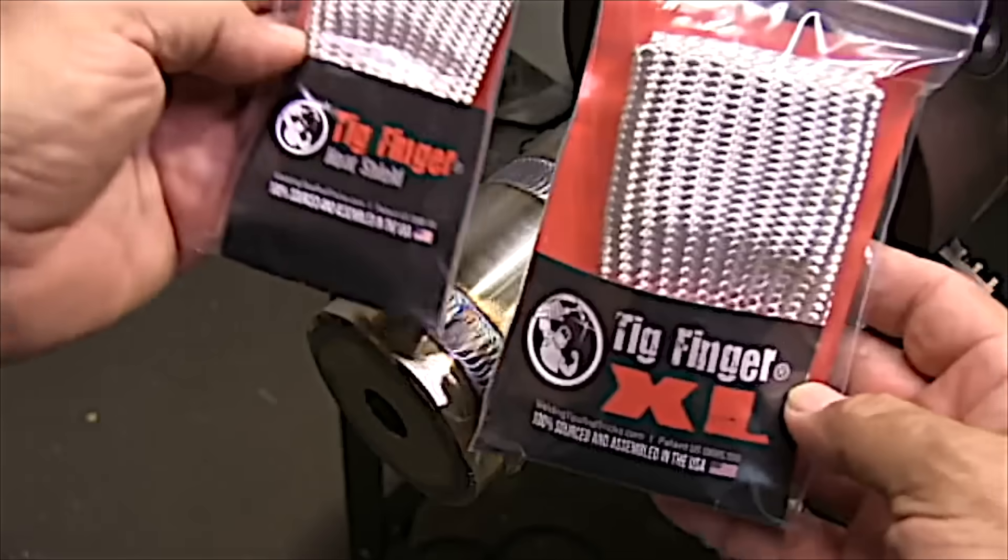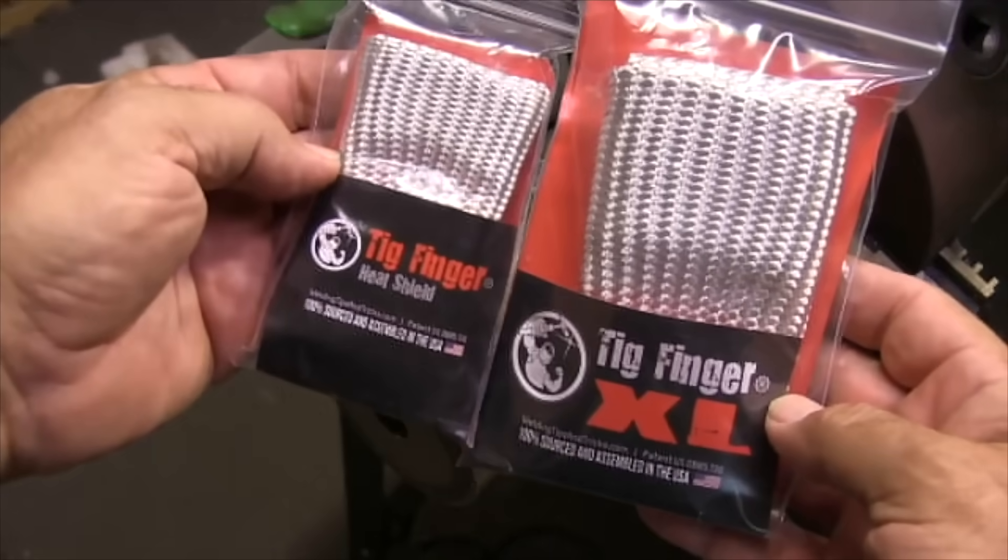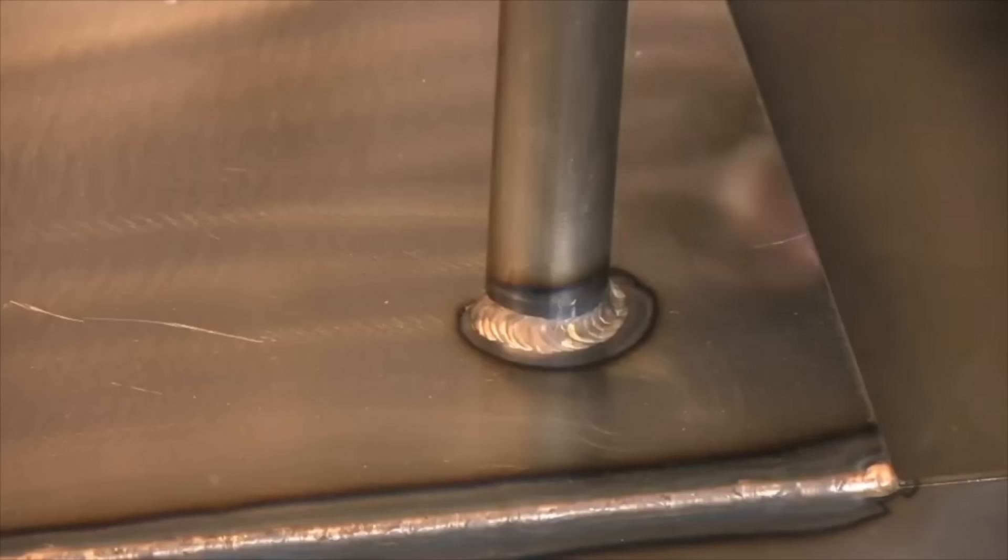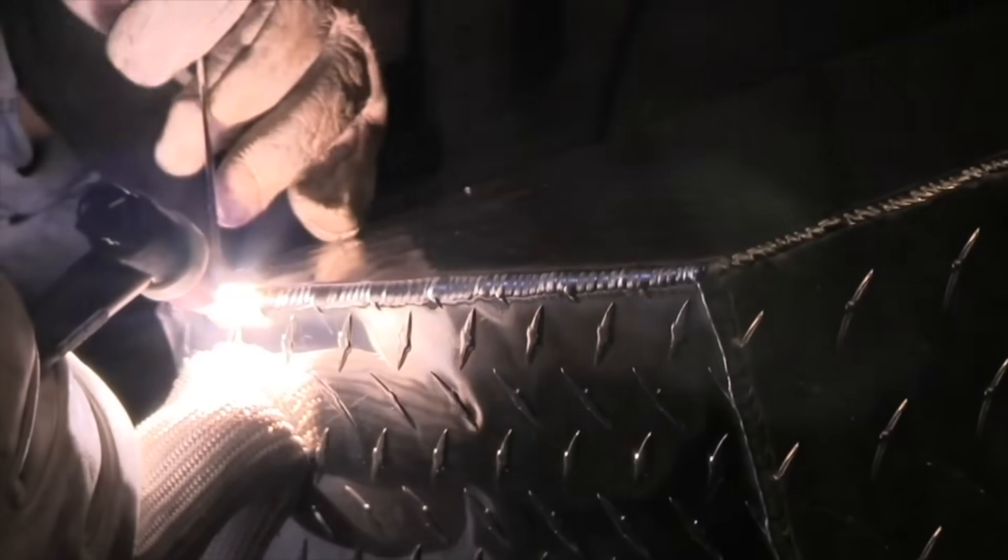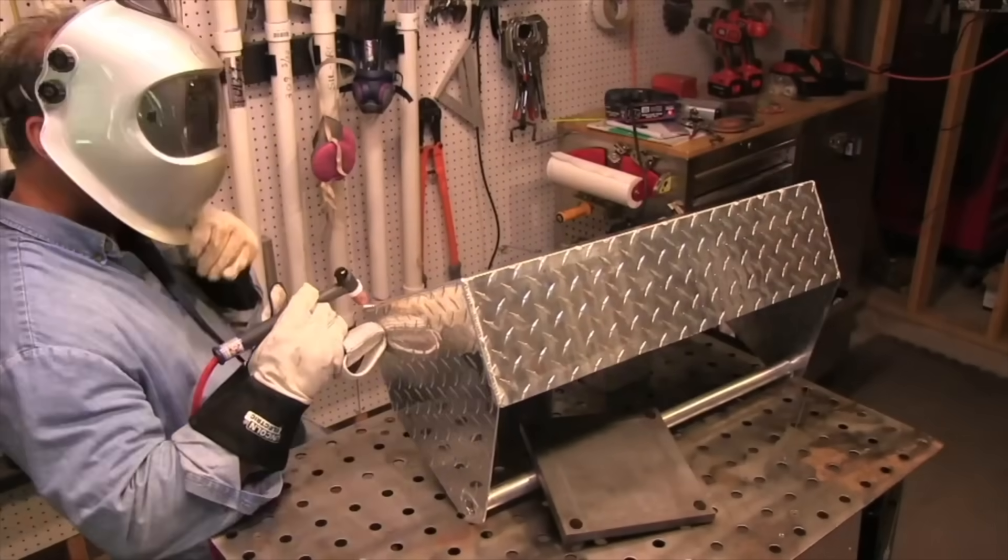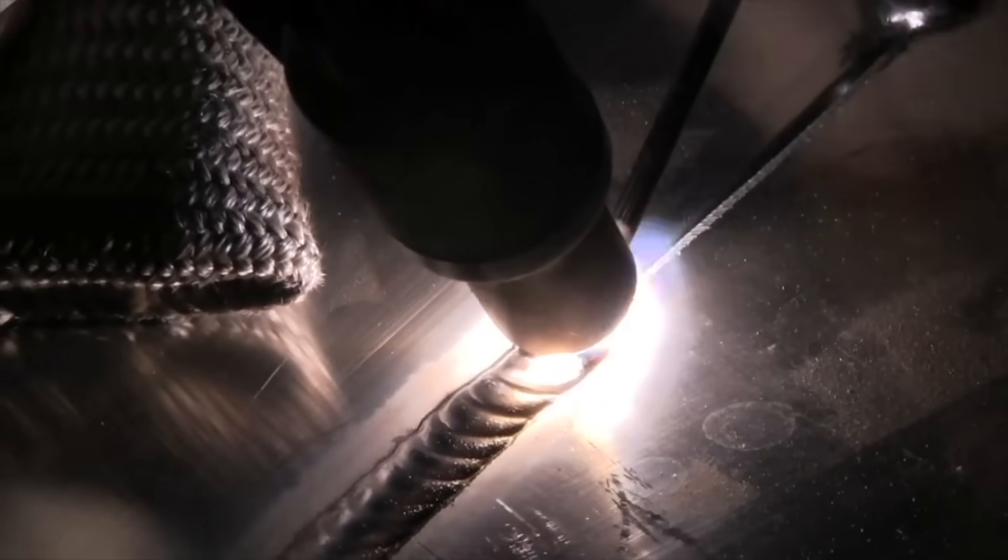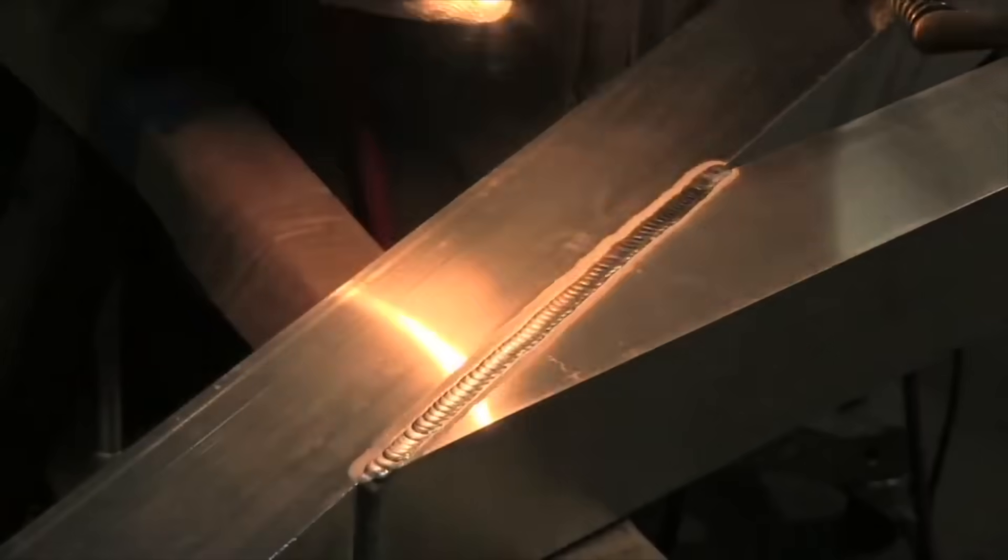Sometimes you might be welding on preheated parts and want to slip two fingers in the TIG finger. The TIG finger XL is awesome for that. A TIG finger will give you lots of options on where to prop when there is no prop. Aluminum is something that we all know heats up really quickly and it's hard to find a place to prop on that. A TIG finger will let you glide along smoothly and will keep your fingers cool.